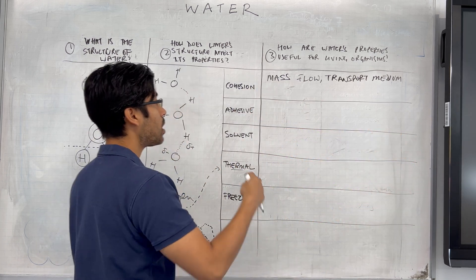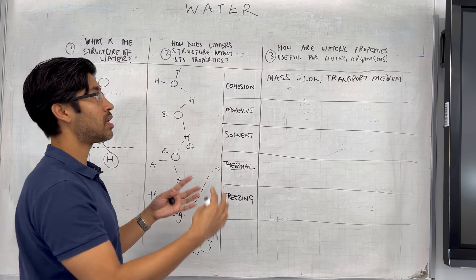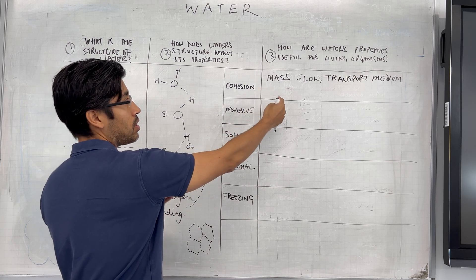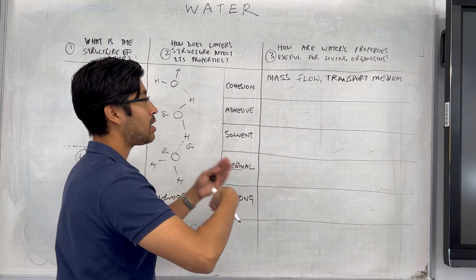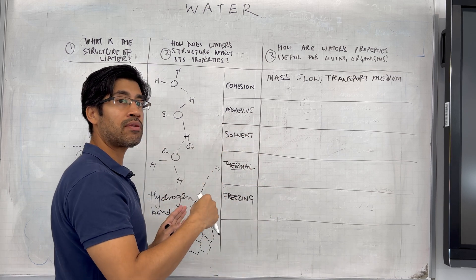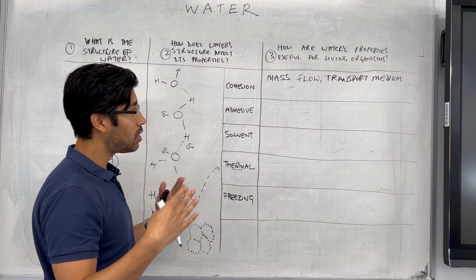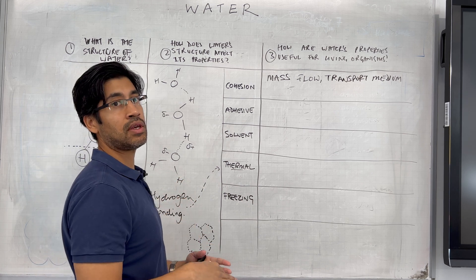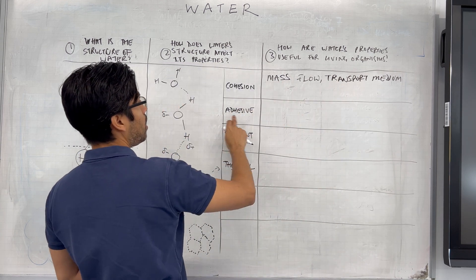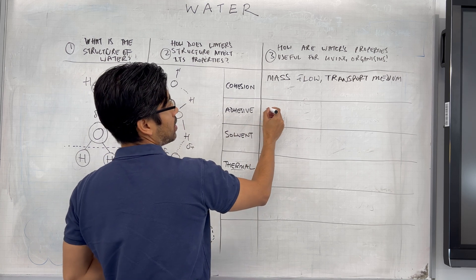The substances in those systems are moved along because of mass flow, and mass flow occurs because of cohesion. This is a revision video, but if any part doesn't make sense, make a note and investigate further. Problems at A-level are often caused by gaps in understanding at the GCSE level, so don't be too proud to revisit that material.